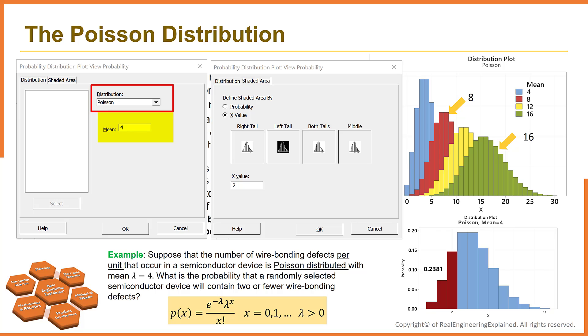Then go to the shaded area. Select x. And select left tail, since we are looking for two or less wire bonding defects. And enter 2 for x value. And hit OK.